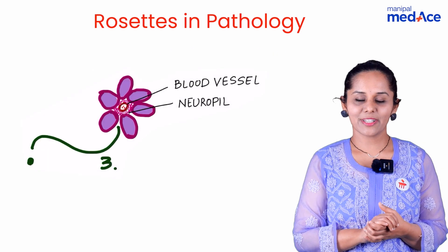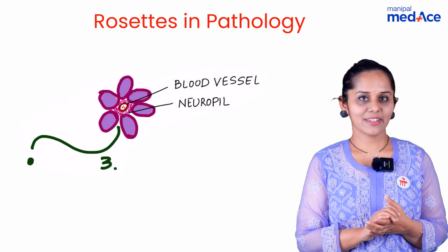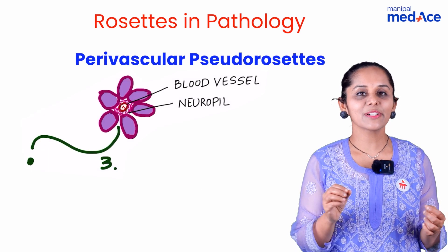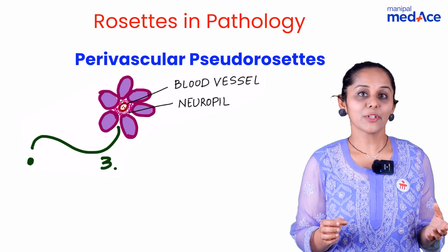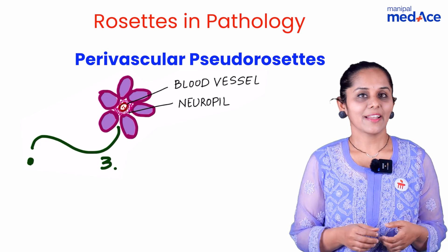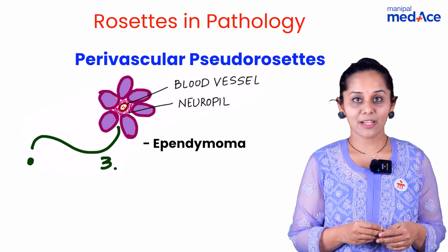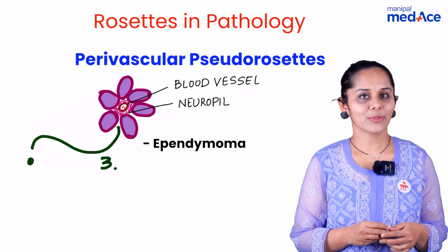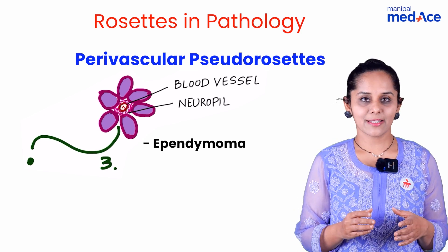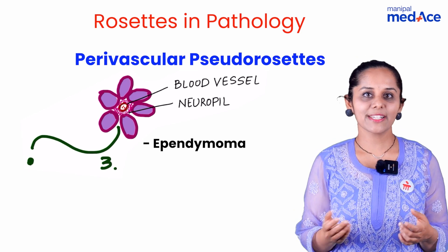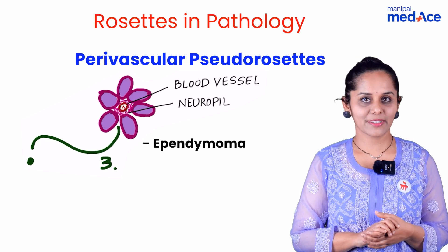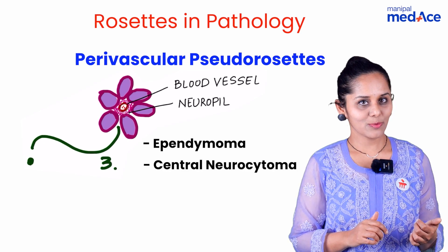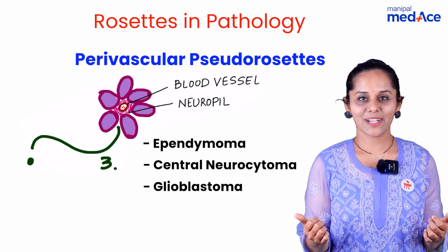The third type of rosette is very interesting, also called a pseudorosette, where you have a central blood vessel and some neuropil. That is characteristic of ependymoma and we also call it the ependymal pseudorosette. This type of rosette can also be seen in other tumorous conditions like central neurocytoma and glioblastoma.